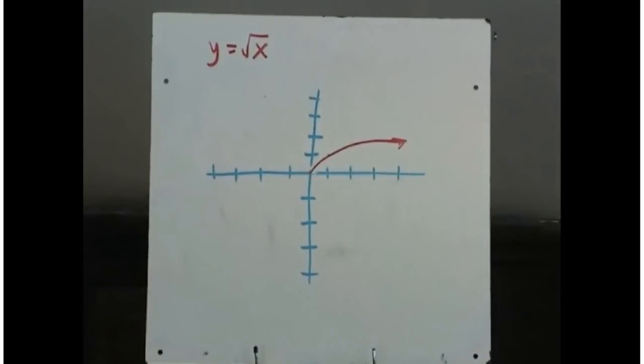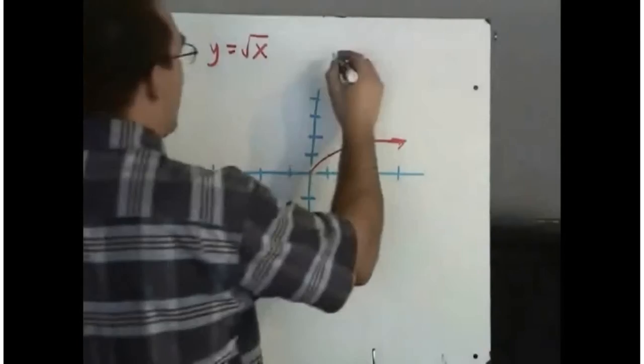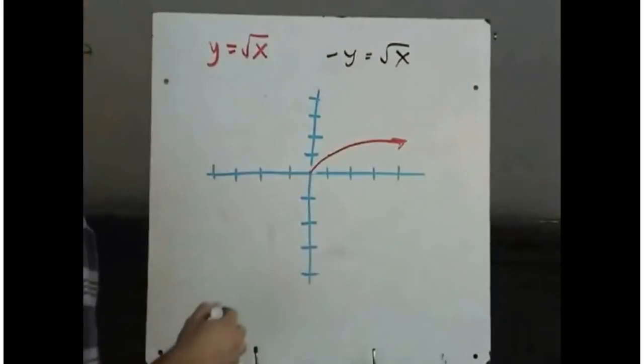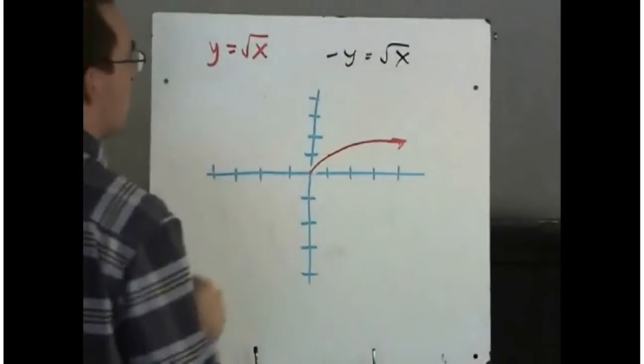So when we replace x with minus x, it reflects in the y axis. Let's see what would happen if we replaced the y value with minus y. Okay, so if I take the y value of my function replaced with minus y.